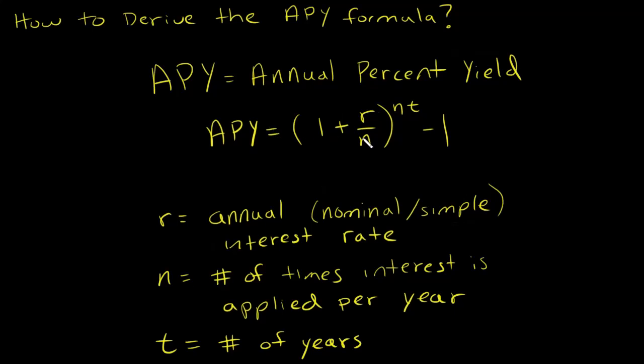Now I want to talk about how to derive the formula for annual percent yield. Remember, annual percent yield is basically the rate of return that you will earn if you have compounded your interest. Let me write that down.